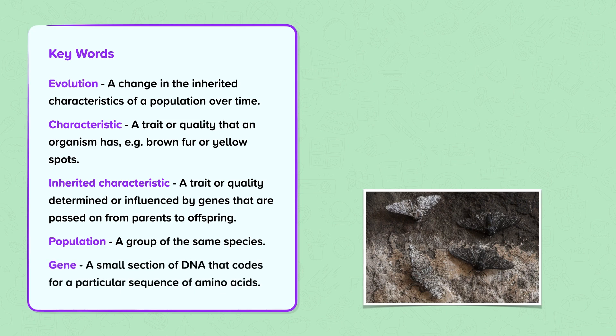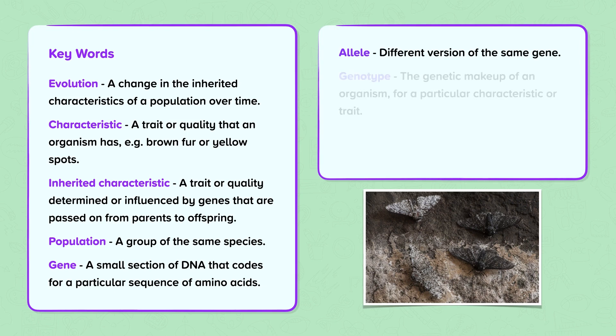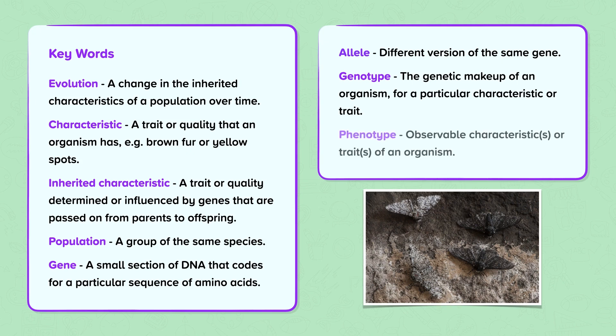Genes: a small section of DNA that codes for a particular sequence of amino acids. Allele: a different version of the same gene. Genotype: the genetic makeup of an organism for a particular characteristic or trait. Phenotype: observable characteristics or traits of an organism.